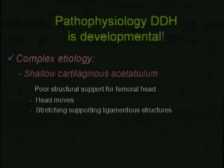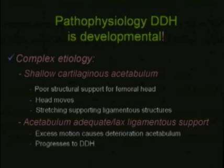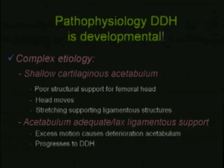The pathophysiology of DDH is developmental with a complex etiology. In some babies, the problem is a shallow cartilaginous acetabulum, providing poor structural support for the femoral head so that the head moves and stretches the supporting ligamentous structures. In others, the acetabulum is adequate but ligamentous supports are lax, and excess motion of the head causes deterioration of the acetabulum, which can progress to DDH.